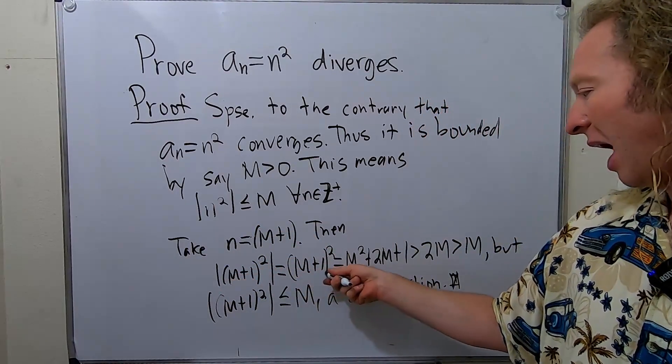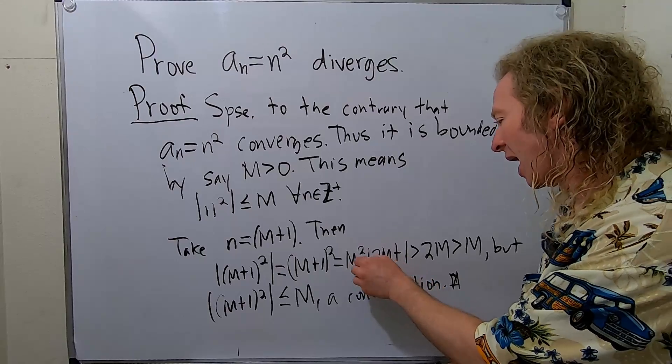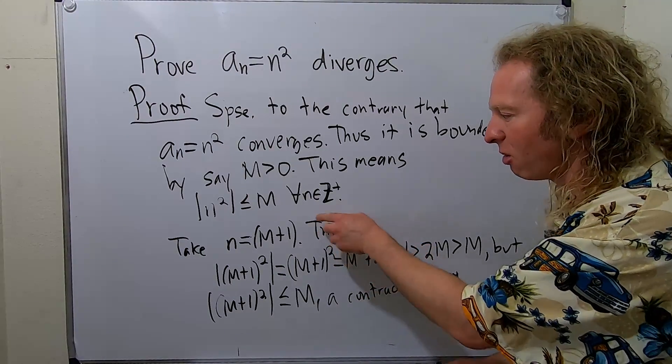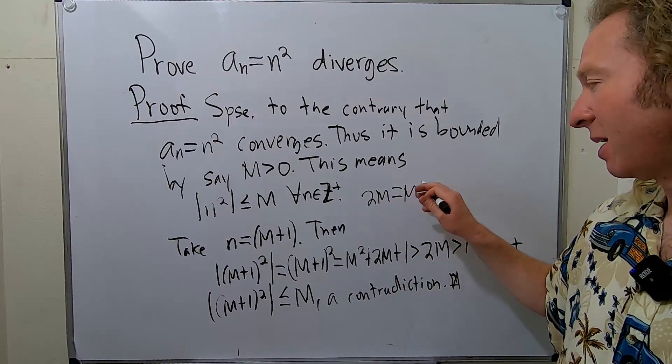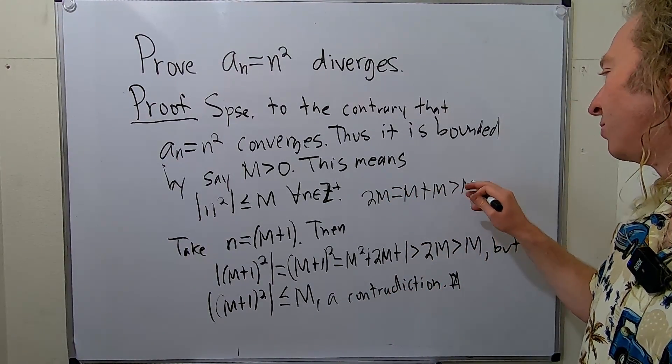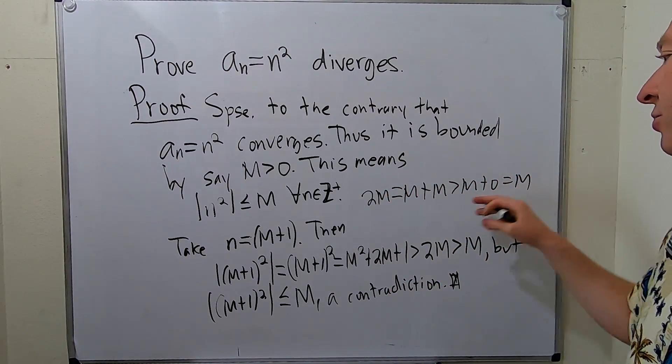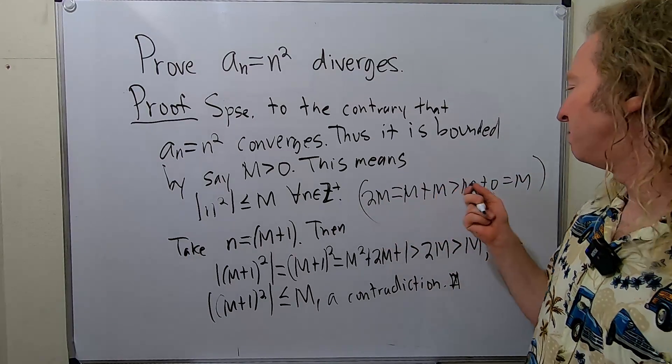You plug it in here, I wrote it out. I got rid of M² and 1 because I know I can compare 2M to M. 2M is really M + M, which is bigger than M + 0, which equals M. So 2M is bigger than M.